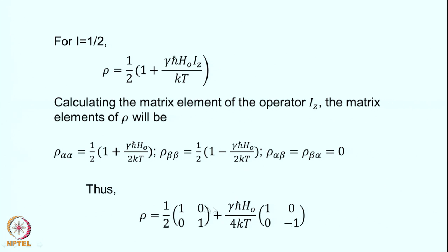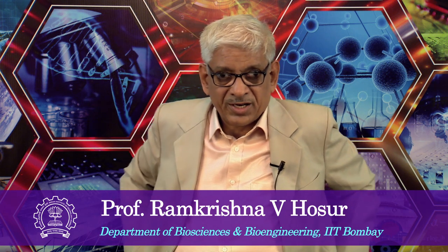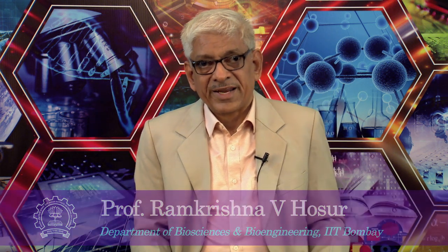The off-diagonal terms alpha-beta and beta-alpha are zero because the cross terms vanish — only the diagonal terms are non-zero. I think this is a good point to stop, and we will continue with the discussion of the elements of the density operator in further detail in the next classes.